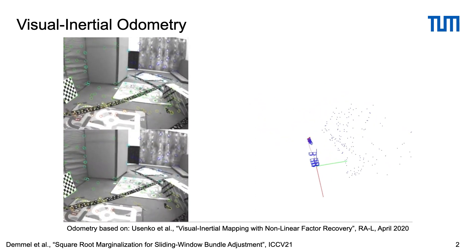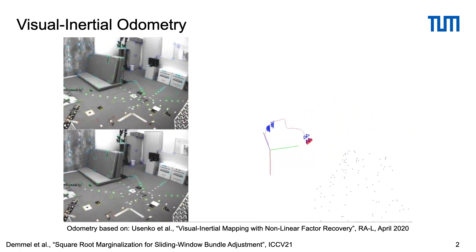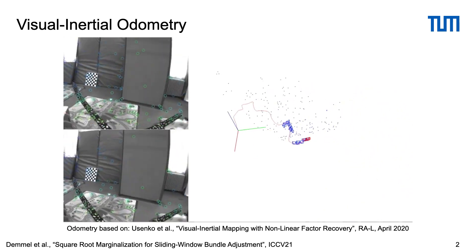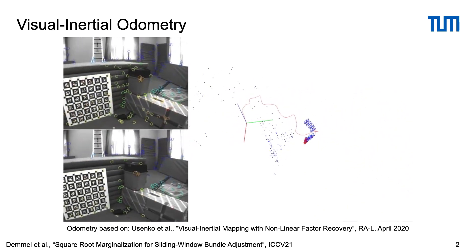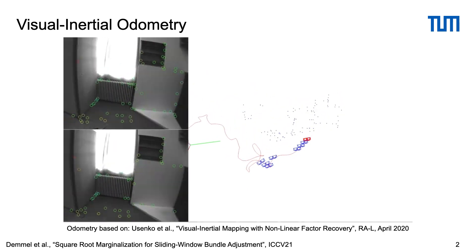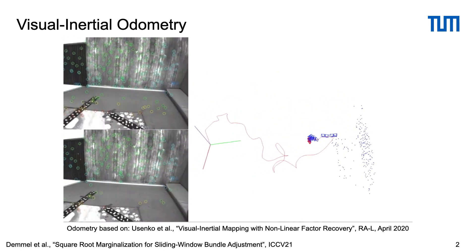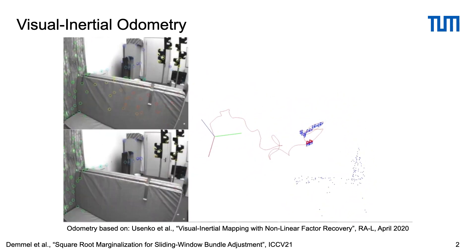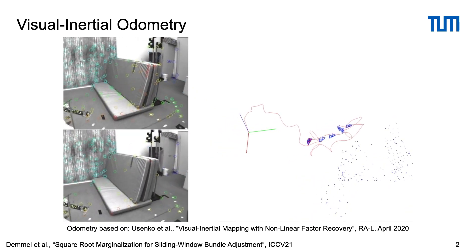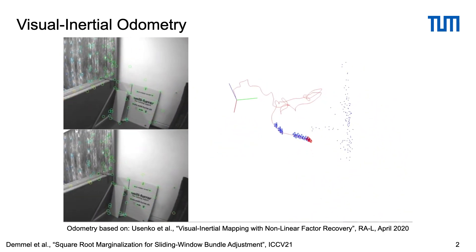In visual odometry, we estimate the motion of a camera system by optimizing visual and possibly inertial residuals in a sliding window of image frames and 3D landmarks. The proposed system is based on the state-of-the-art odometry Basalt, and we aim to speed up optimization and make marginalization numerically more stable to enable computation in single precision.